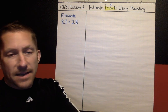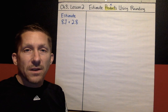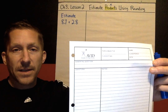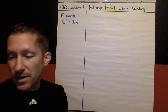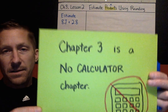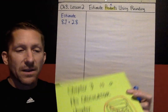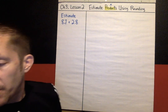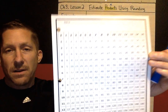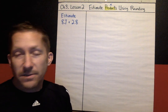Just as a reminder, when you see the Cornell note format on the notes, you should be following along on a note page or in your composition book. And another reminder that Chapter 3 is a no-calculator chapter. You may use a multiplication table when we get to multiplying, but no calculators.